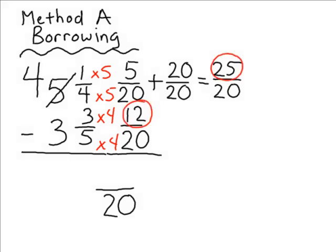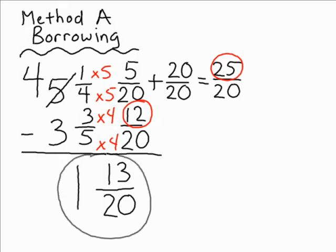Now that the top fraction is larger than the bottom fraction, we are going to find the difference of the two numerators. 25 take away 12 gives us 13. Remember, the denominator stays the same when adding or subtracting fractions. So the difference of 25 twentieths and 12 twentieths is 13 twentieths. Now to subtract the whole numbers, 4 take away 3 is 1, so our answer is 1 and 13 twentieths.